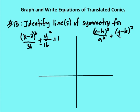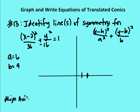The equation corresponds to x minus h squared over a squared plus y minus k squared over b squared, where a is the larger denominator. My a value is the square root of 36, so a equals 6, and my b value is the square root of 16, so b equals 4. My center is located at (h, k): h equals 2 and k equals 0, so the center is at (2, 0). Since the a value is under the x variable, the major axis is horizontal, and I write the major axis as y equals 0.